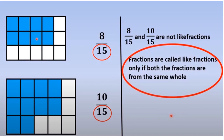Dear children, observe here: these two rectangles are not the same. Here also 8 parts are shaded out of 15 and here 10 parts are shaded out of 15, but these two rectangles are not the same because they are not the same whole. Fractions are called like fractions only if both fractions are from the same whole.